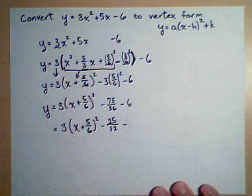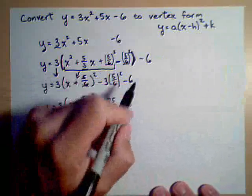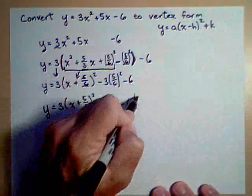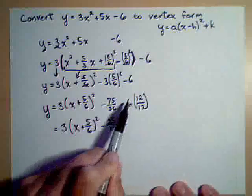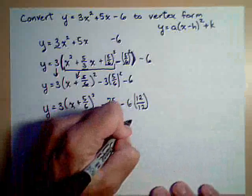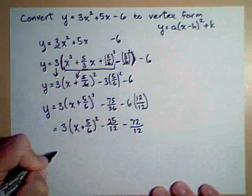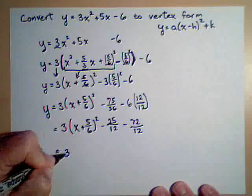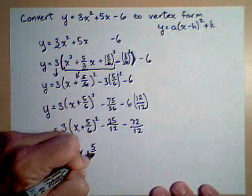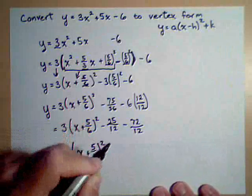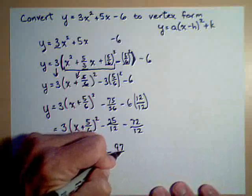These have a common factor of 3. So this will reduce down to 25 over 12. And let's make this a fraction. We're going to need common denominators. So we've got to give 6 a denominator of 12. Recall how we do that. We multiply this by 12 over 12. So that's going to give us 72 over 12. Both of these, in fact, are negative. So 3 times (x plus 5 sixths) squared minus 97 over 12. And we have now converted to standard or vertex form.